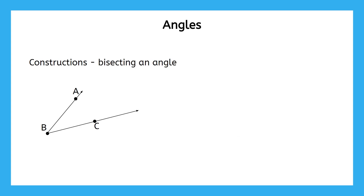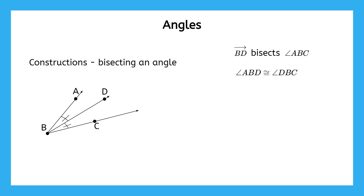The second angle-related construction is how to bisect an angle. Bisect means to split an angle into two equal parts. If we bisect this angle with ray BD, then we can write that ray BD bisects angle ABC. And since bisecting splits the angle equally into two parts, we can mark the two angles as congruent, and say that angle ABD is congruent to angle DBC.